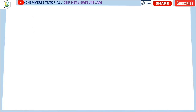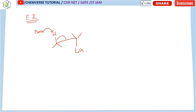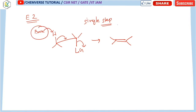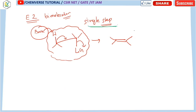Now we will discuss E2 elimination. For E2 elimination, the base attacks the substrate, abstracting a hydrogen, which forms a double bond, and the leaving group is removed — all in a single step. As a result, we get an alkene. Since it is a single-step concerted reaction, it involves the concentration of the base as well as the concentration of the substrate, making it bimolecular.